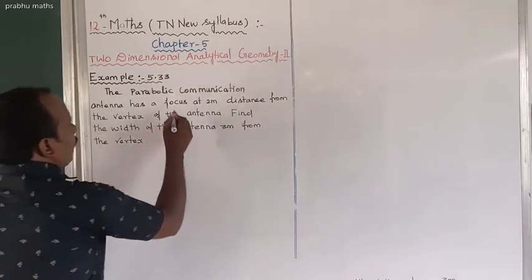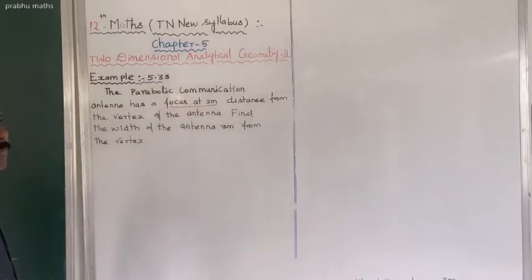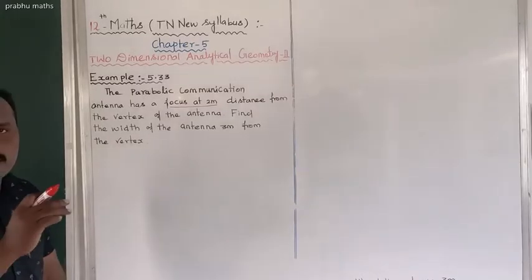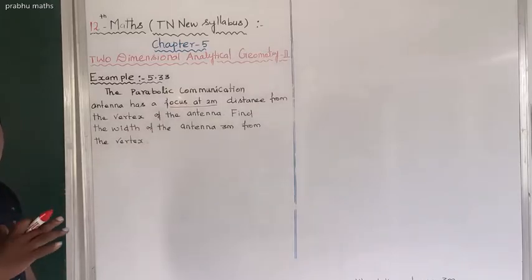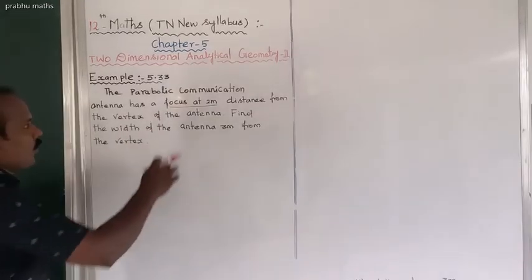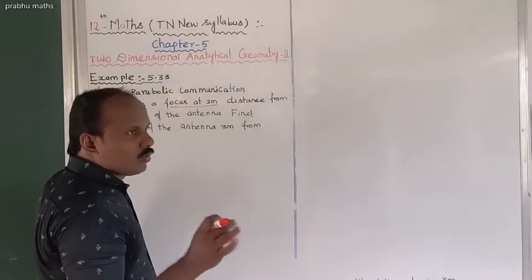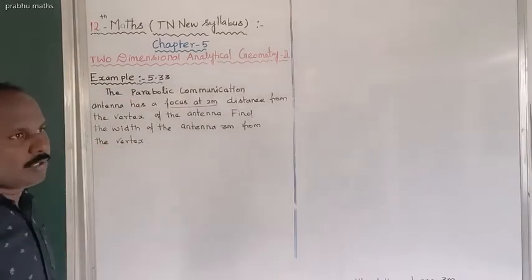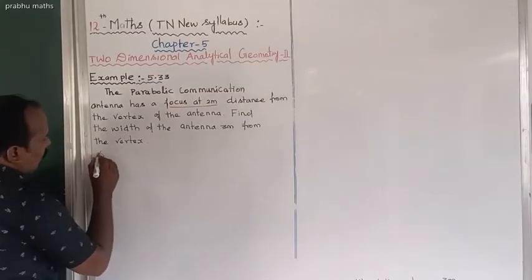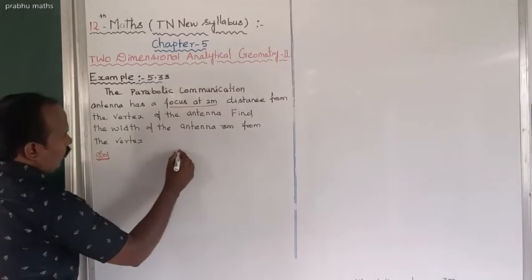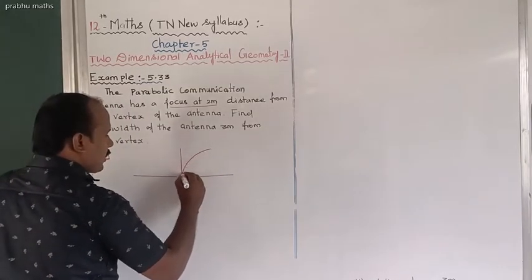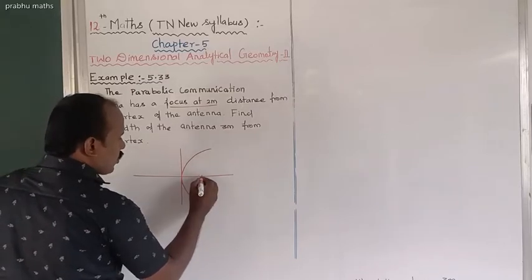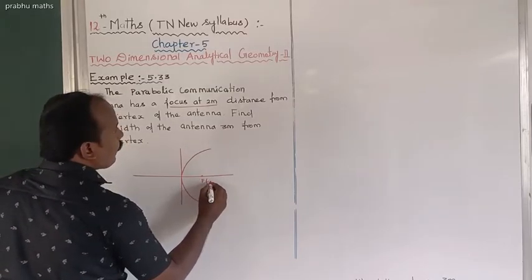The antenna is 2 meters, positive 2 meters. This is a right-side open parabola. Why? Because the focus is on the X-axis. The focus is at 2, so this is a right-side open parabola.